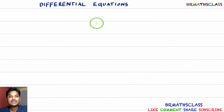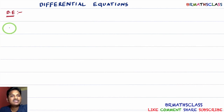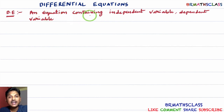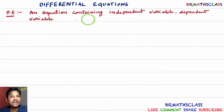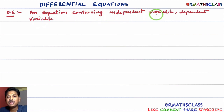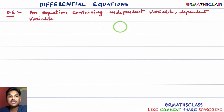First, we will learn the definition of differential equation. Differential equation, I simply write as DE. DE means differential equation. An equation containing independent variable and dependent variable. Here, we must know what is an independent variable and what is a dependent variable.